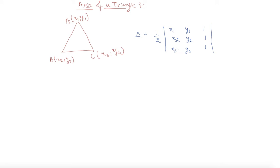Now let us discuss one question based on it so that it will get more clear to you guys. Find the area of a triangle whose vertices are (3, 8), (-4, 2) and (5, 1). Okay, so we need to find out the area of this triangle.